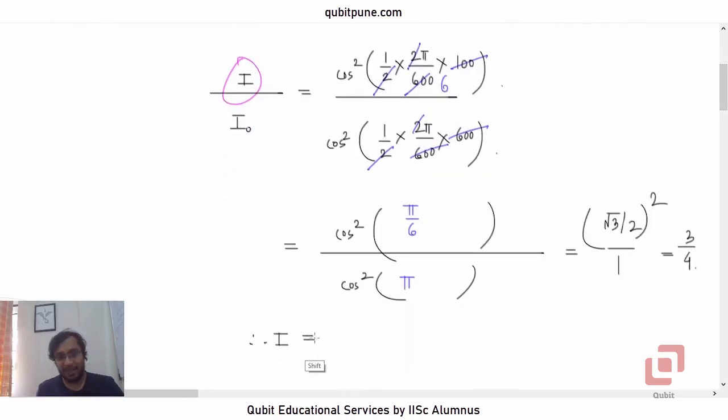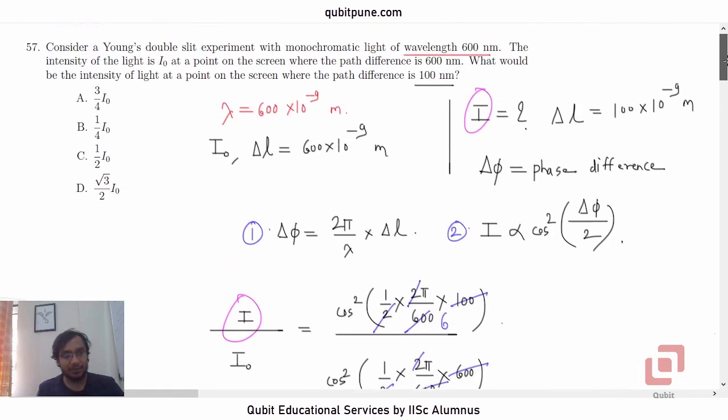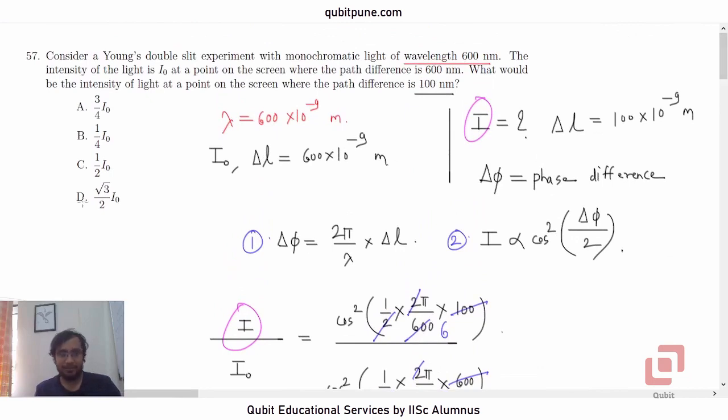What is I? The required intensity will be 3 times I0 by 4, 3 times I0 by 4. That is option A. Question 57 option A.